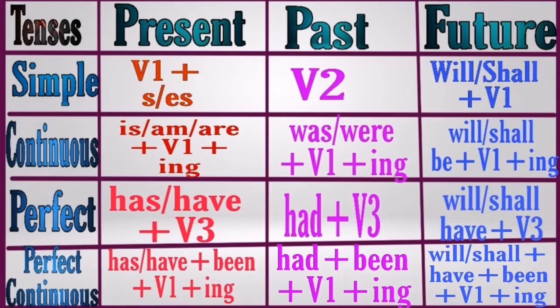In future perfect continuous, the structure is 'will/shall' plus 'have' plus 'been' plus V1 plus '-ing.' Notice that V3 is used across present, past, and future perfect tenses. Also, 'been' appears in all perfect continuous forms. Continuous tense always takes '-ing.' These patterns make the 12 rules very easy to understand.